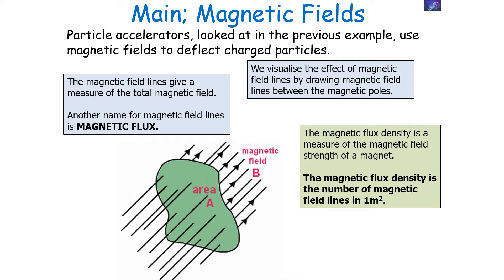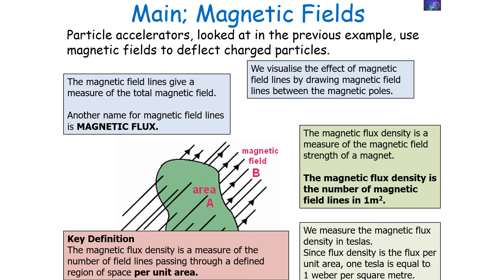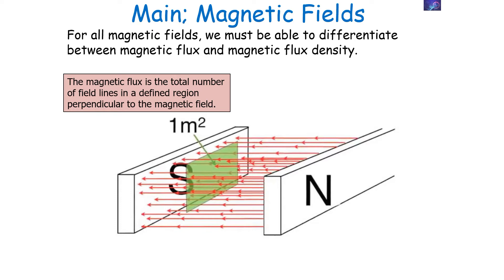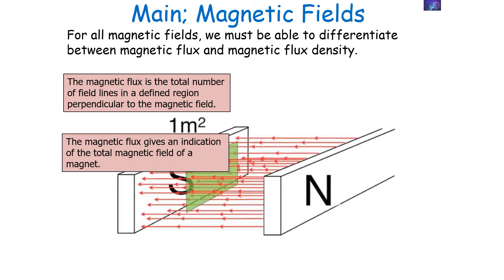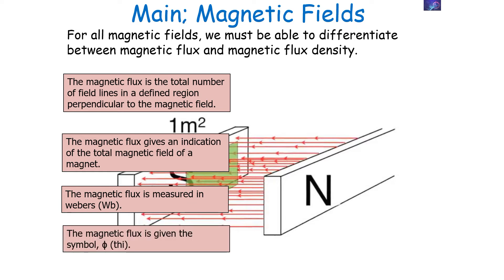The magnetic flux density is a measure of the magnetic field strength of a magnet. The magnetic flux density is the number of magnetic field lines — the magnetic flux — in one metre squared. It's important to say that the magnetic flux density is a measure of the total number of field lines passing through a defined region of space per unit area, which is an important difference. We measure magnetic flux density in Teslas, and since magnetic flux density is the flux per unit area, one Tesla is equal to one Weber per square metre. The magnetic flux gives an indication of the total magnetic field of a magnet, and we measure magnetic flux in Webers (Wb), and give magnetic flux the symbol phi (Φ).